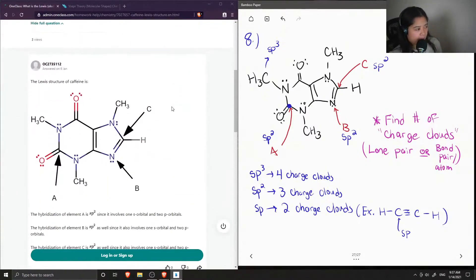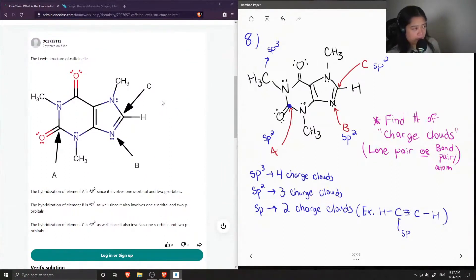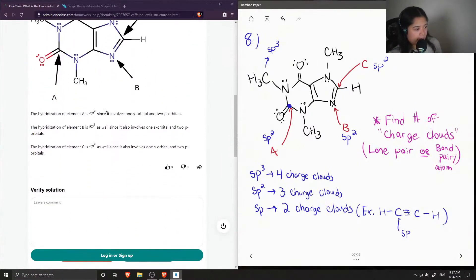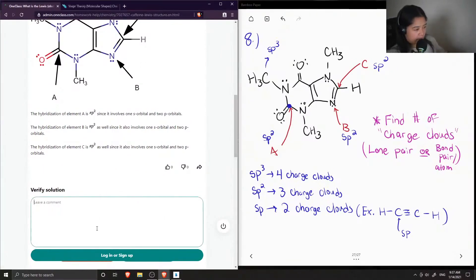Now let's see what the tutor said. They drew out the Lewis structure and said that all of the atoms had an sp2 hybridization, so this solution is correct.